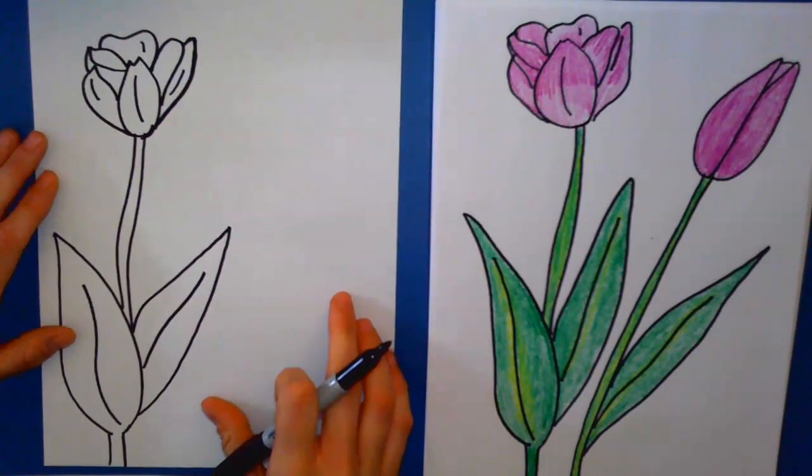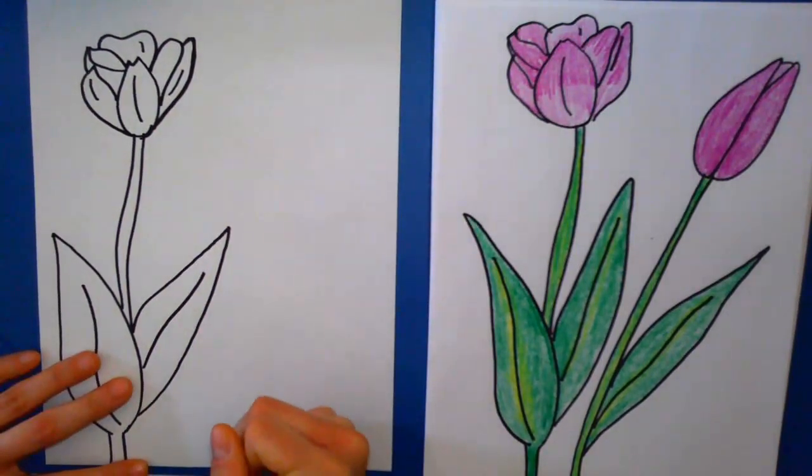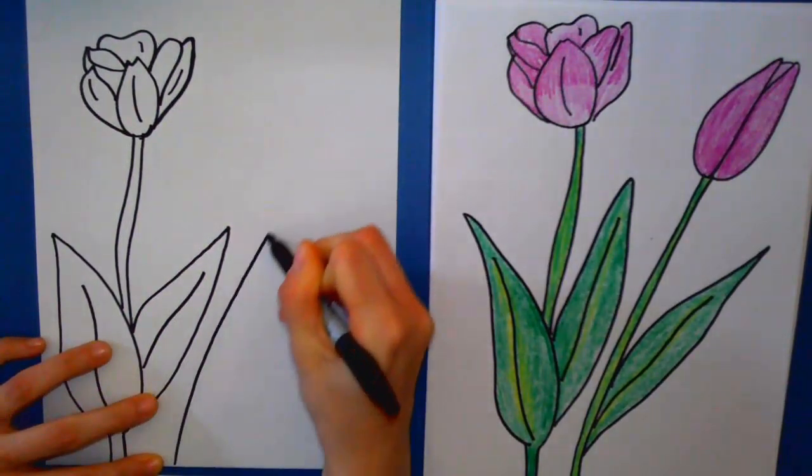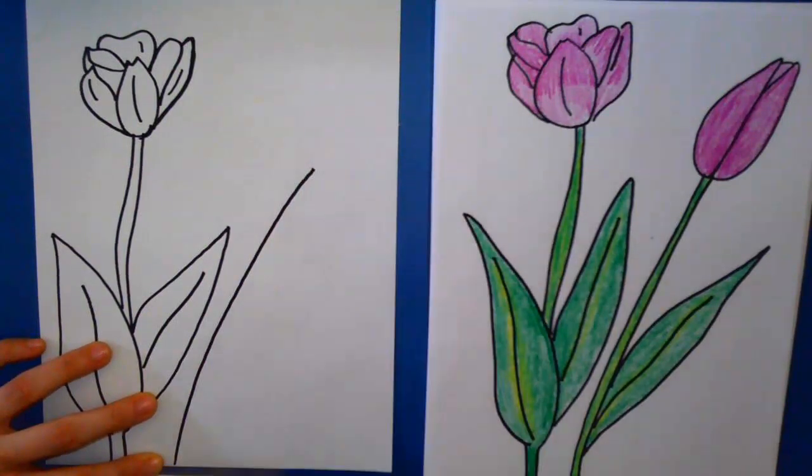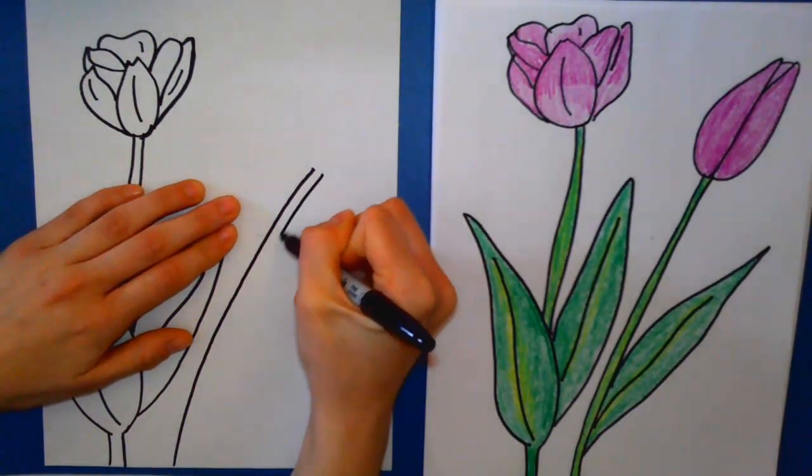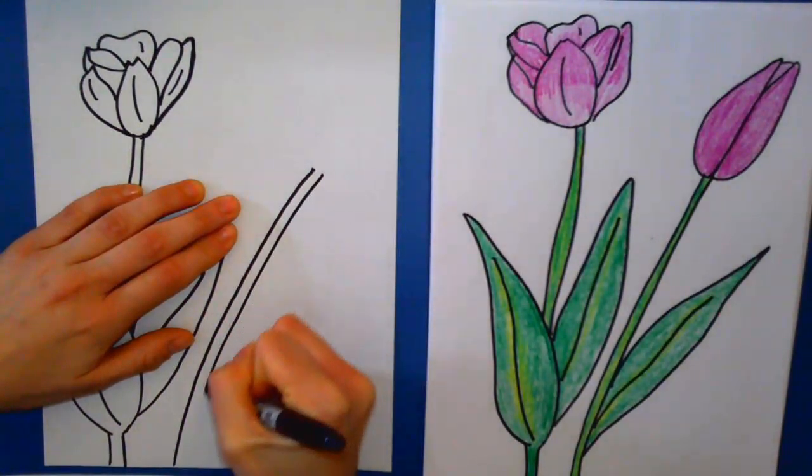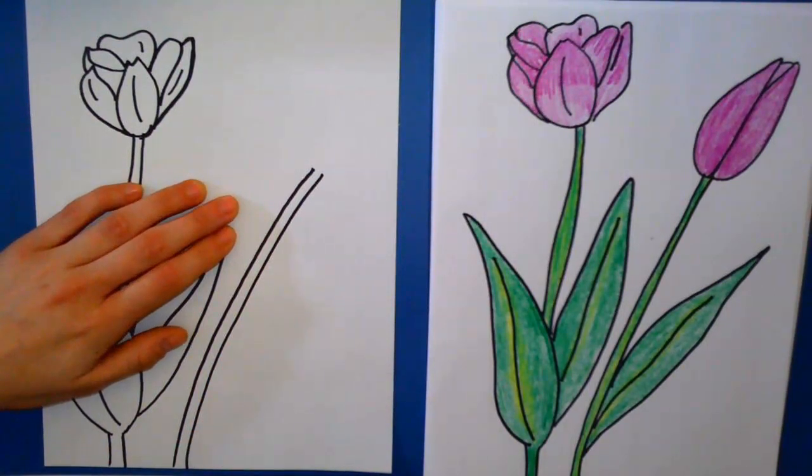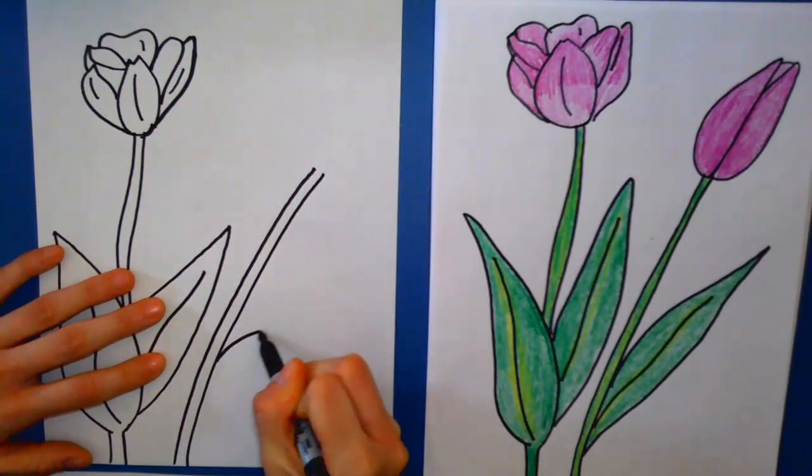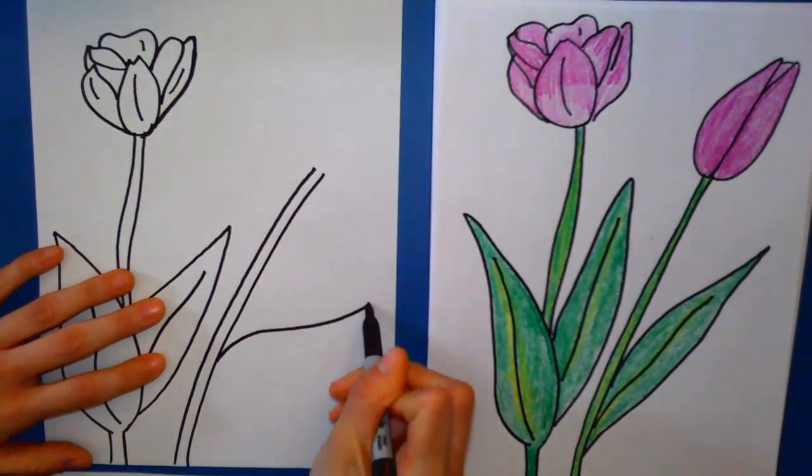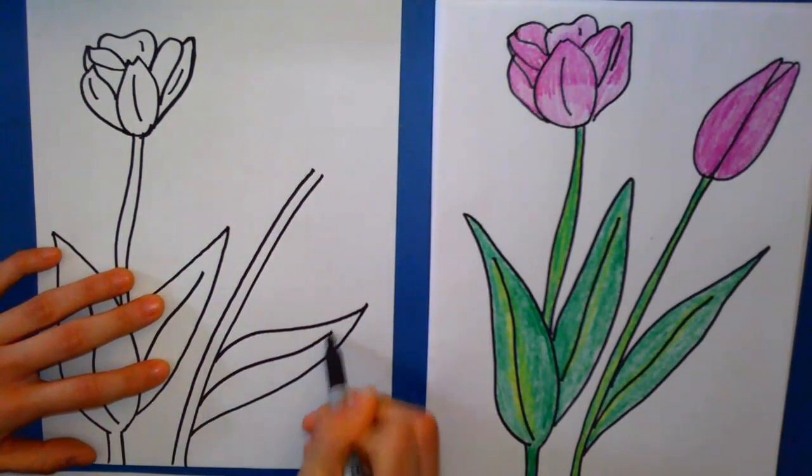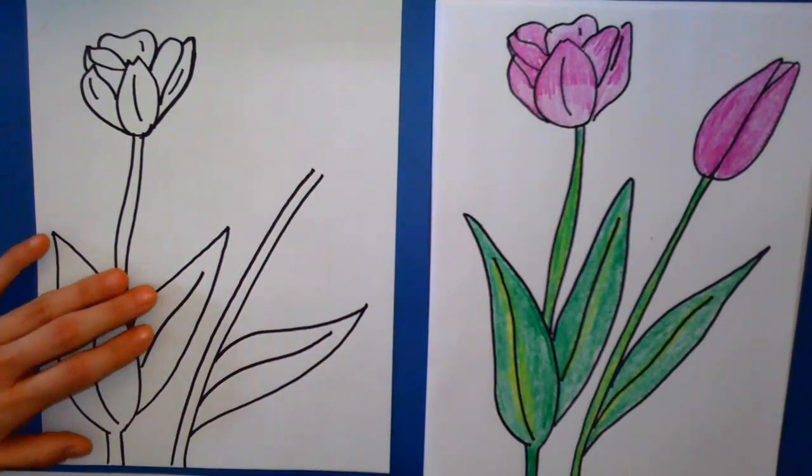All right and now we're gonna do the second flower. So we're gonna start again at the bottom for our stem and this time we're gonna go up pretty high. Decide where you want your second flower to start. And then we're gonna bring that on the other side back down following the same slope you did with the one side. And then curve around to a point back down and around with the line in the middle that follows the same shape as the outline.